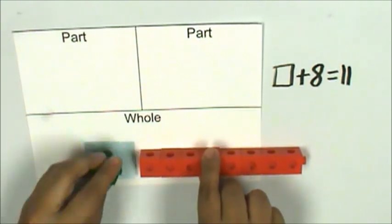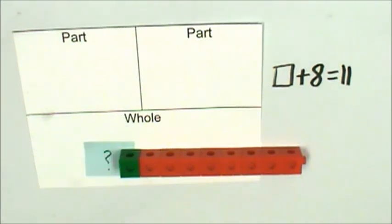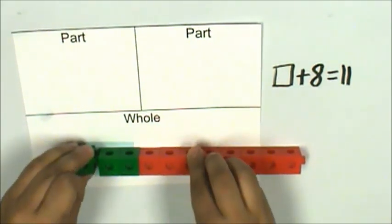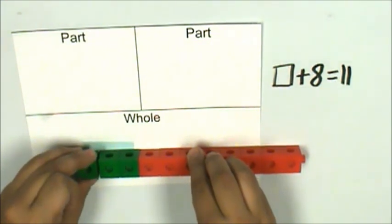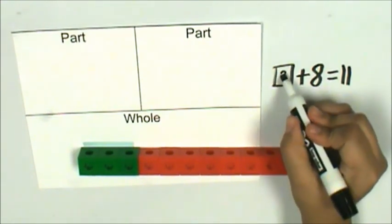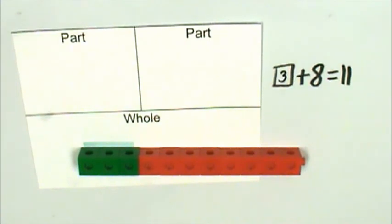That was eight, nine, ten, eleven. These are the three crayons Sean had to begin with. Three plus eight equals eleven.